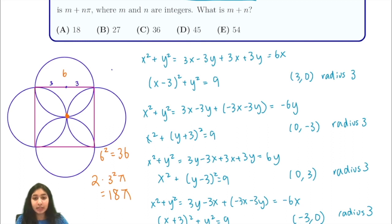So our total area is 36 + 18π, and we're trying to find m + n, which is 36 + 18 or 54. So our answer is E, 54.